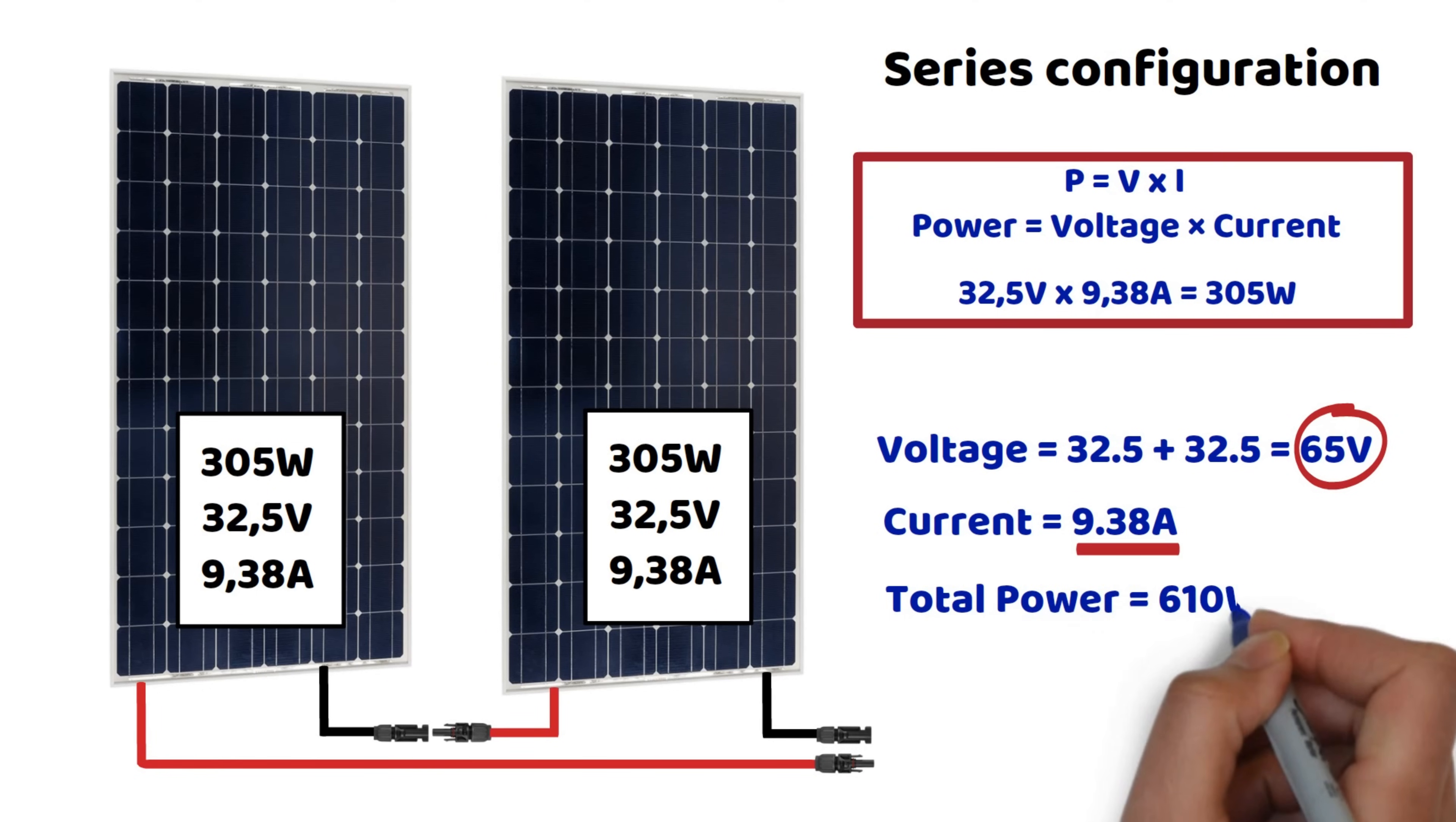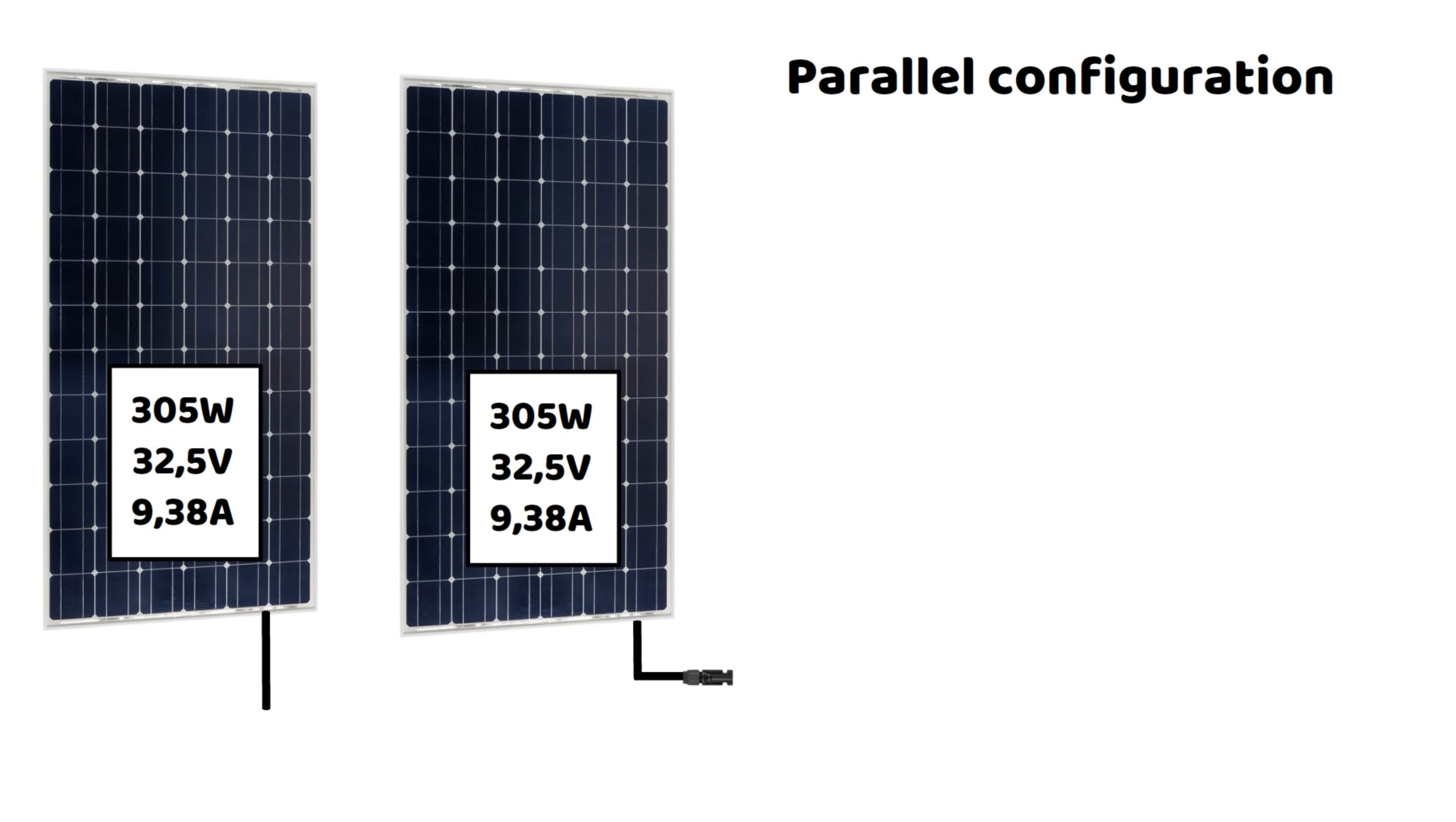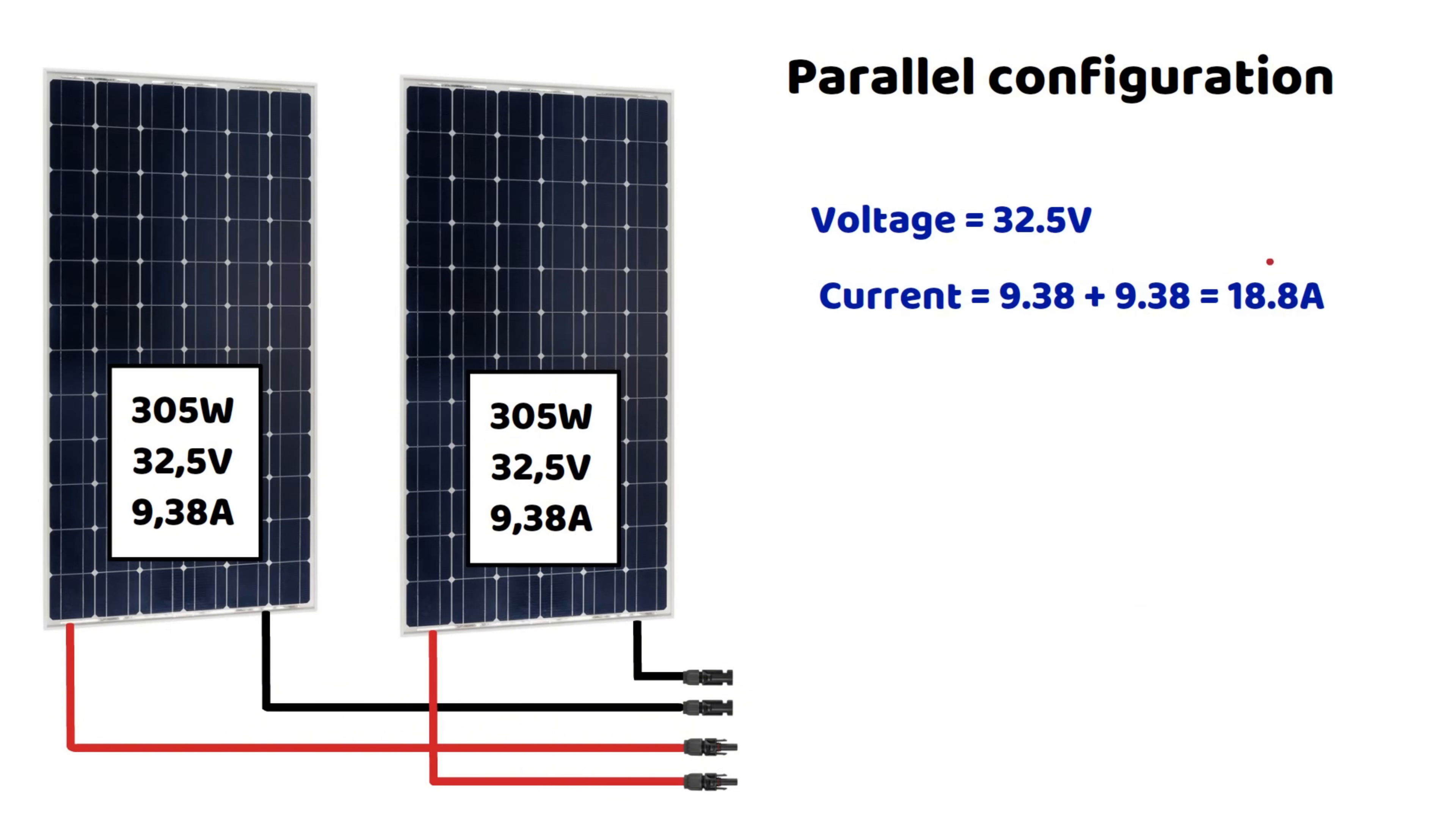For a parallel setup with the same panels, still with 305 watts of power, it's the currents that add up, while the voltage remains constant. So in this configuration, we would have an overall voltage of 32.5 volts and a current of approximately 18.8 amps. The power would also be 610 watts.